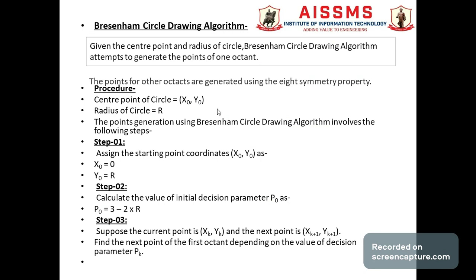Now we will discuss the Bresenham's circle drawing algorithm procedure. Given the center point and radius of the circle, the algorithm generates the points of one octant. We require the center point (x0, y0) and the radius r. The first step is to assign the starting coordinates: x0 = 0 and y0 = radius of the circle.